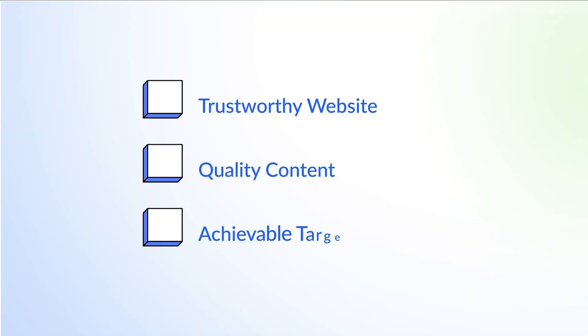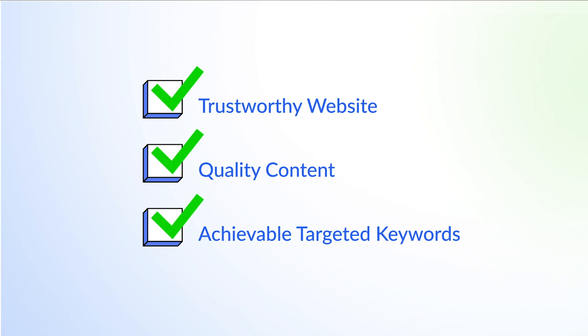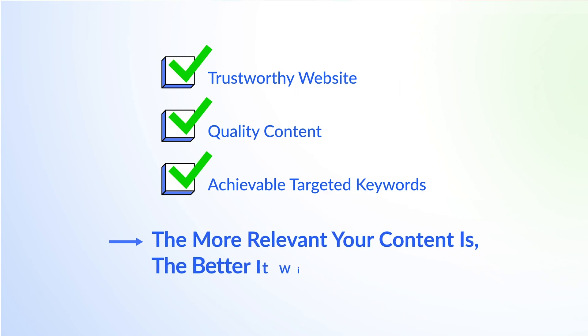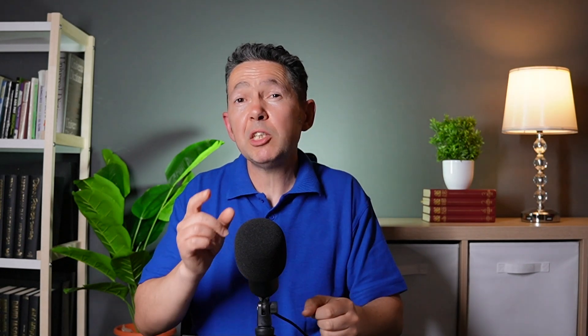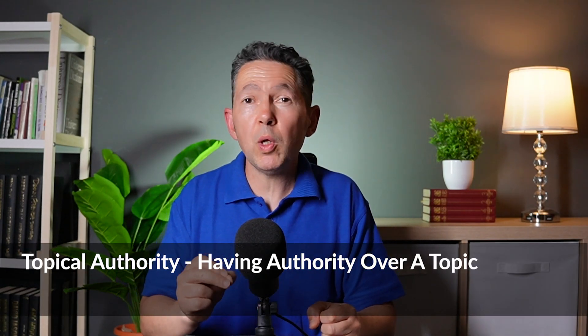Keyword relevancy is another attribute you should consider before choosing a keyword. Relevancy is determined by the search engine and it's one of the most — if not the most — important ranking factors. All things being well, as long as you're ticking all the other boxes — like having a trustworthy website, good quality content, and targeting achievable keywords — the more relevant your content is, the better it will rank. And when it comes to increasing your relevancy, the best strategy at your disposal is topical authority.